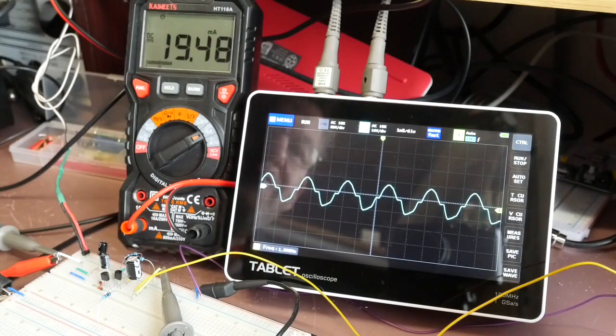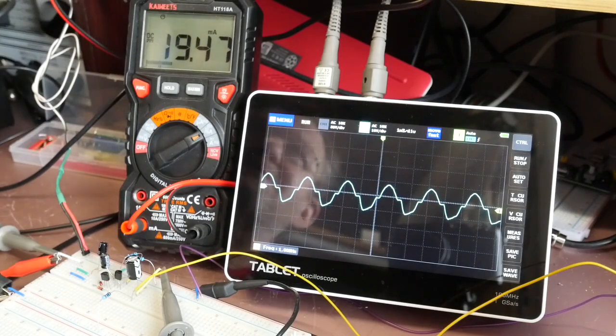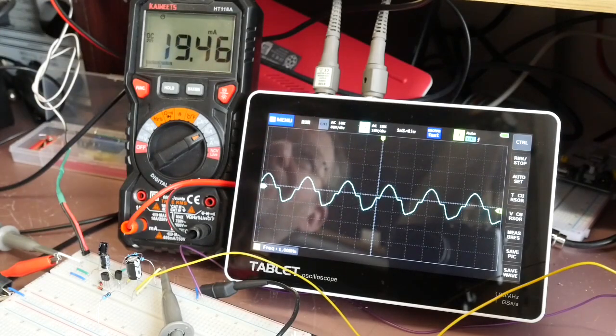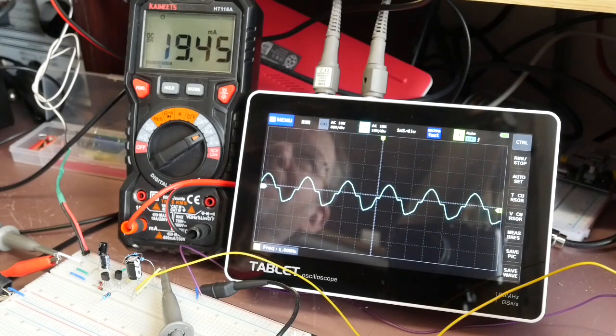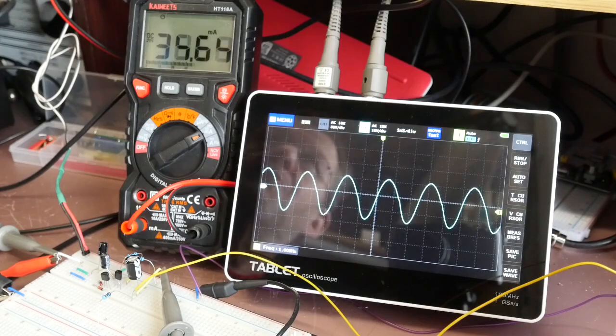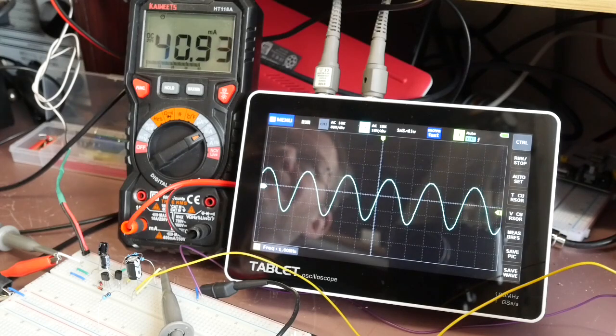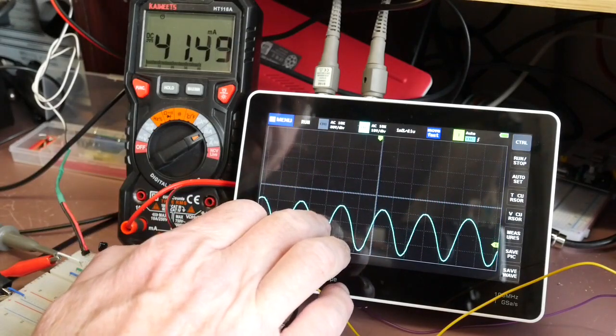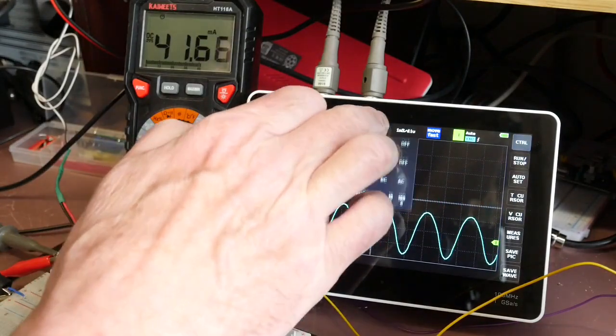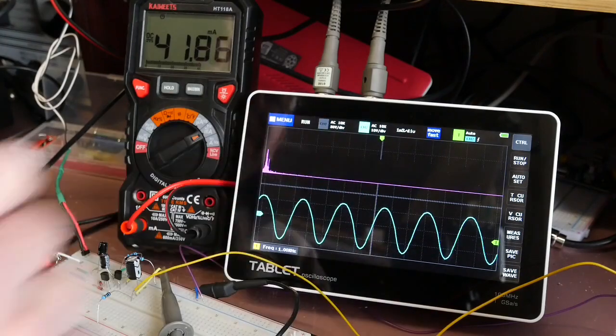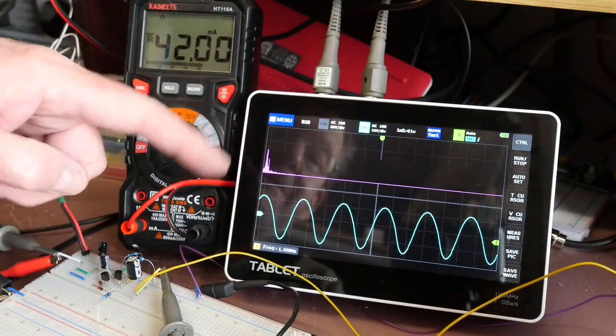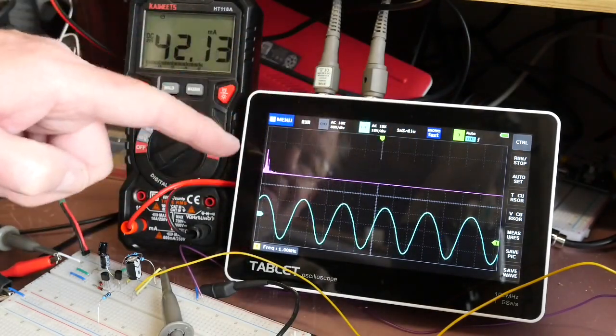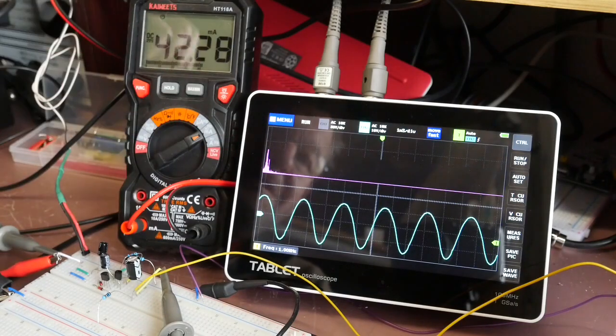So you can hear that sort of slight raspiness in tone which I suppose is the best way to describe it and obviously if you're using this as an audio amplifier that's something that you wouldn't want. Let's have a look what's causing that distortion. If we move that waveform down there and then we enable the fast Fourier transform display, this purple plot here is now giving us the frequency domain display.